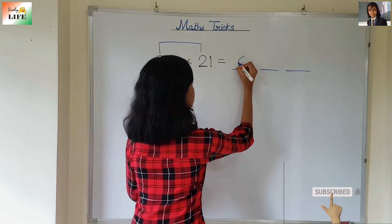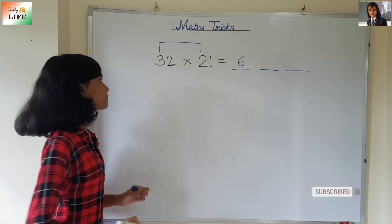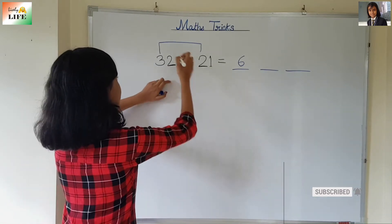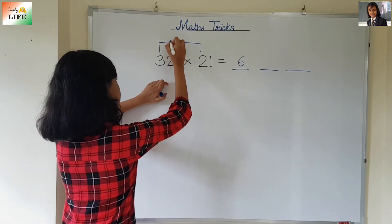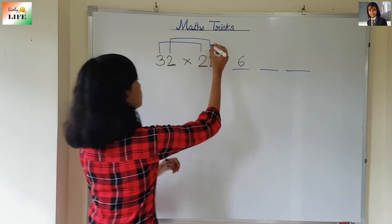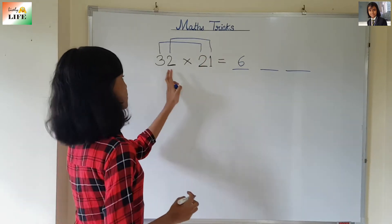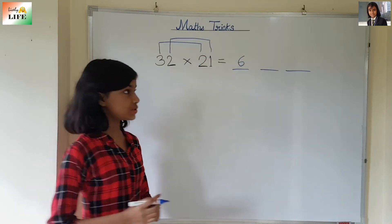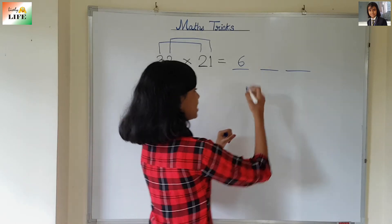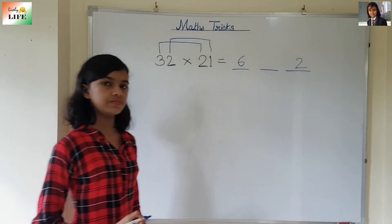So, in the first dash you are going to write 6. And then the second digit: 2 into 1. What is 2 into 1? It is 2. We are not going to write it in the middle dash — we are going to write 2 in the last dash.